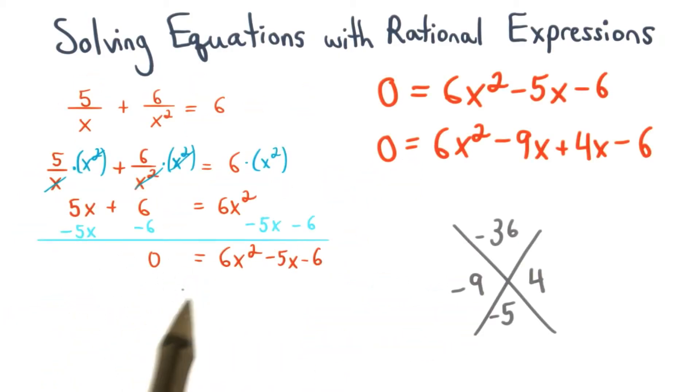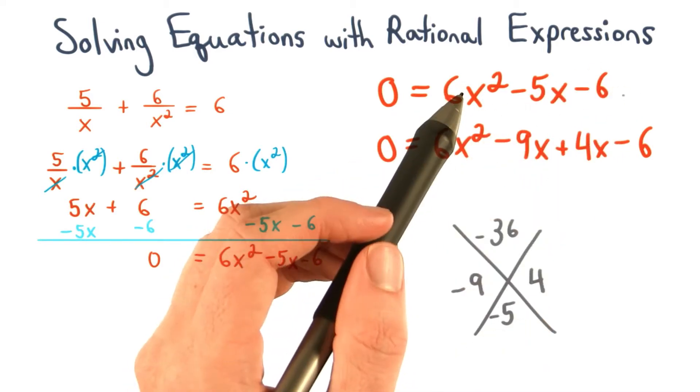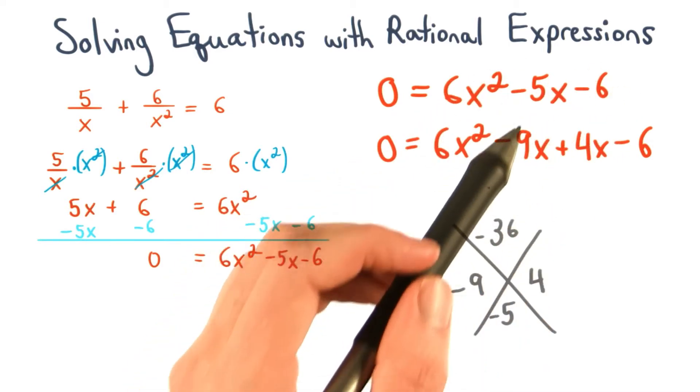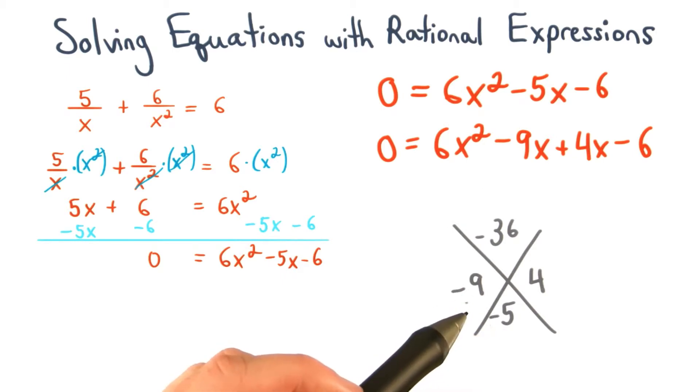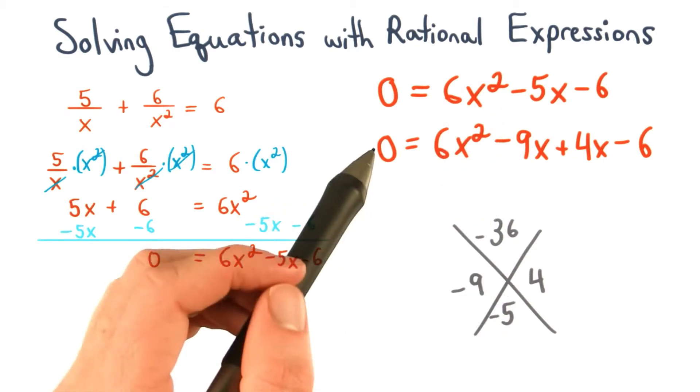So I've taken my equation and rewritten it up here. To factor this part of the equation, we need to find the factors of negative 36 that sum to negative 5. These numbers are negative 9 and positive 4. So we can rewrite our middle term and factor by grouping.